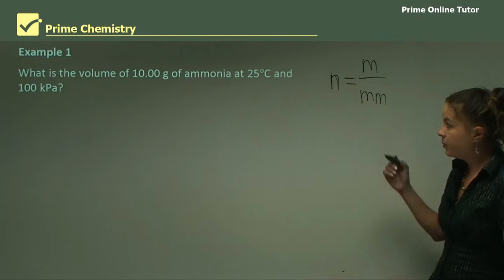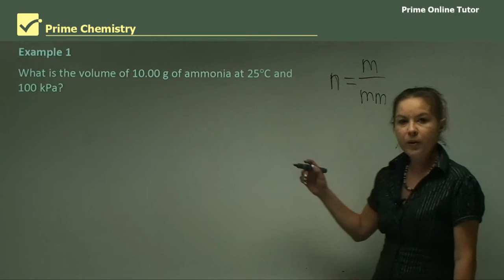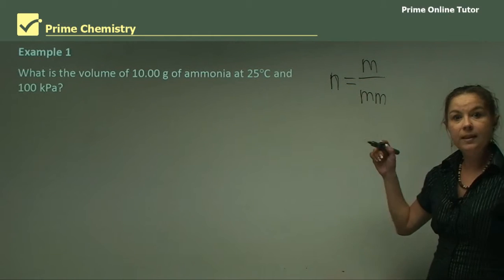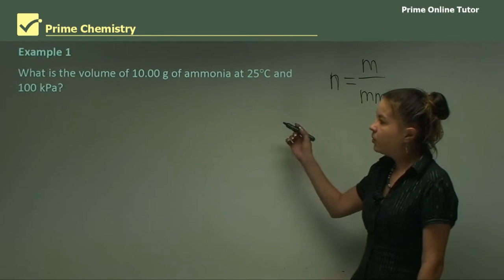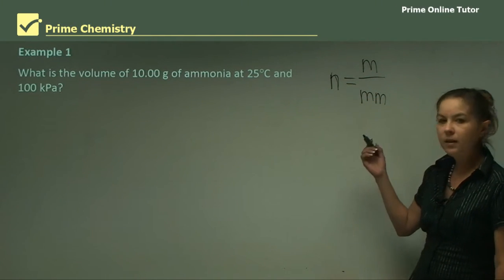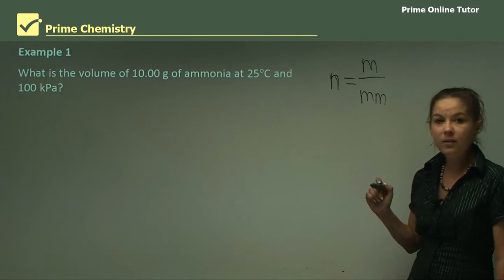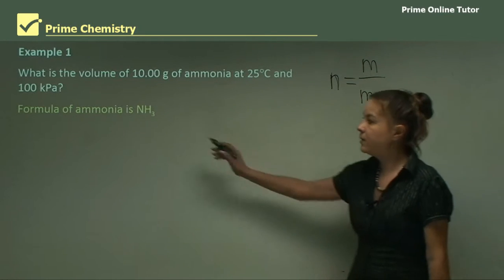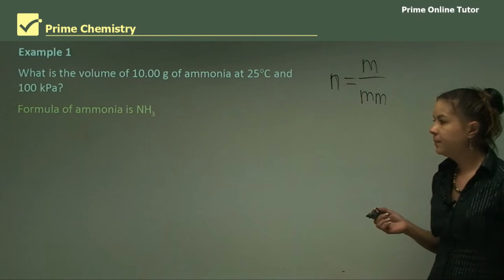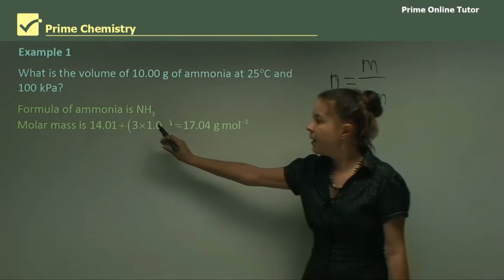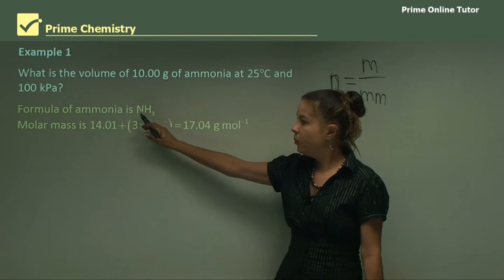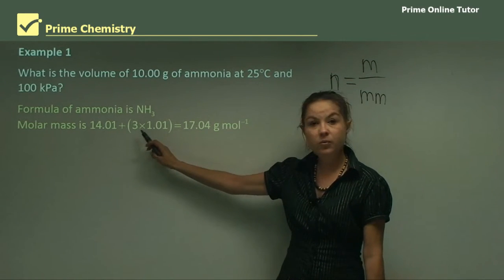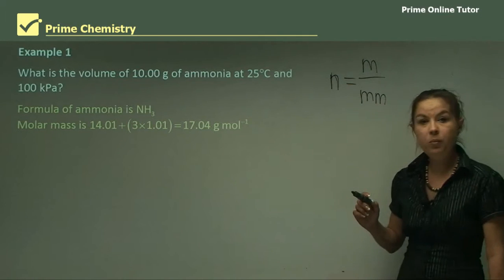So let's look at some examples so that we can know how to work out moles to volume to mass to molar mass. And we'll find that they're all interlinked. So what is the volume of 10 grams of ammonia at 25 degrees and 100 kPa? So start by writing the formula for ammonia. It's NH3. The molar mass, we need to add up what's in NH3. One nitrogen, so 14, plus three hydrogens, three times 1.01 is 17.04.